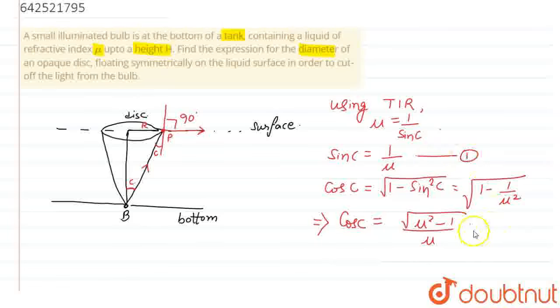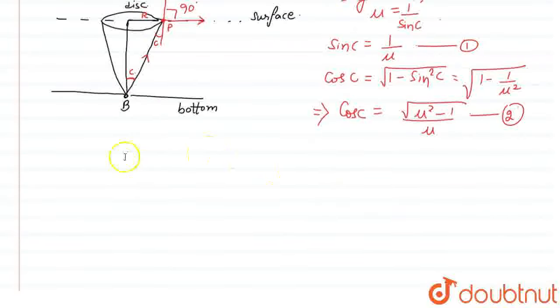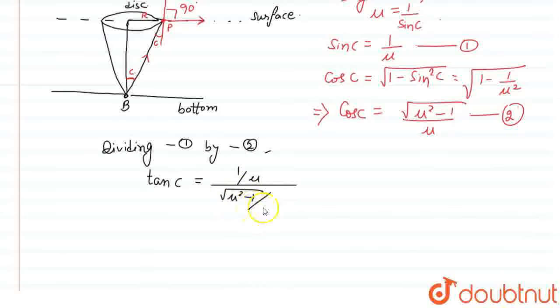So, if we use equation 1 and equation 2, let us divide them. On dividing what we will get is tan C. Dividing equation 1 by 2, we get tan C equal to 1 by mu divided by root of mu square minus 1 by mu, and that will be 1 by root of mu square minus 1.